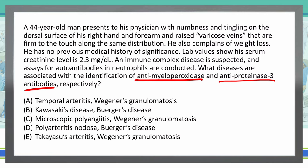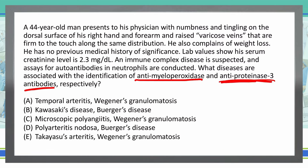By looking at these answer choices, we've got quite a few different options for anti-myeloperoxidase, but for anti-proteinase 3 antibodies, there are only two diseases associated with that per this question. So we should be able to rule out two or three answer choices solely by knowing what anti-proteinase 3 antibodies are associated with. Anti-proteinase 3 antibodies are associated with Wegener's granulomatosis, so Berger's disease is not a possible answer — therefore B and D are out.